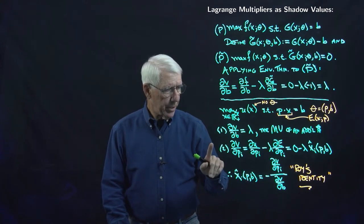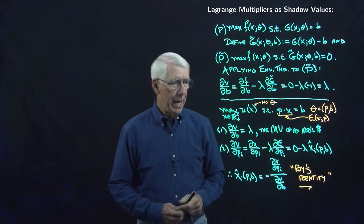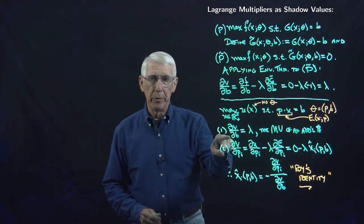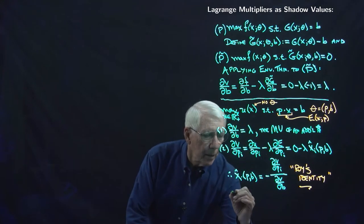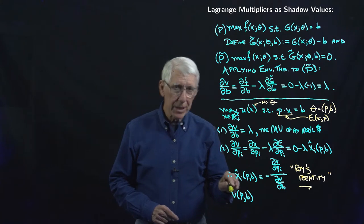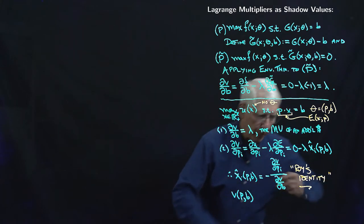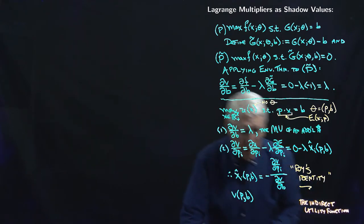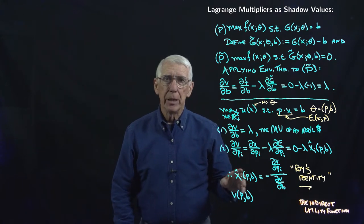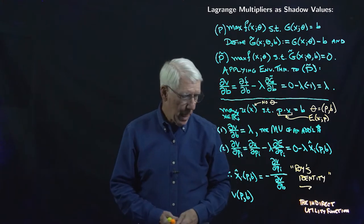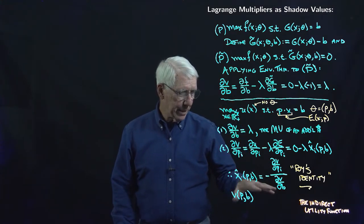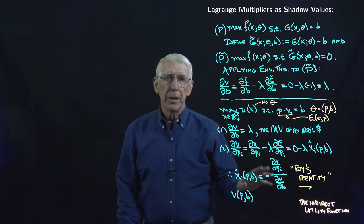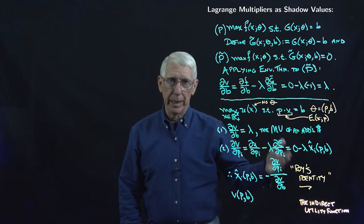There's one more thing to point out: the value function V, whose parameters are P and b, is referred to as the indirect utility function. It gives us the utility level not as a function of the consumption of goods, but as a function of the parameter values — prices and income. The indirect utility function plays a very central role in demand theory, as we can see from its relation to Roy's Identity.